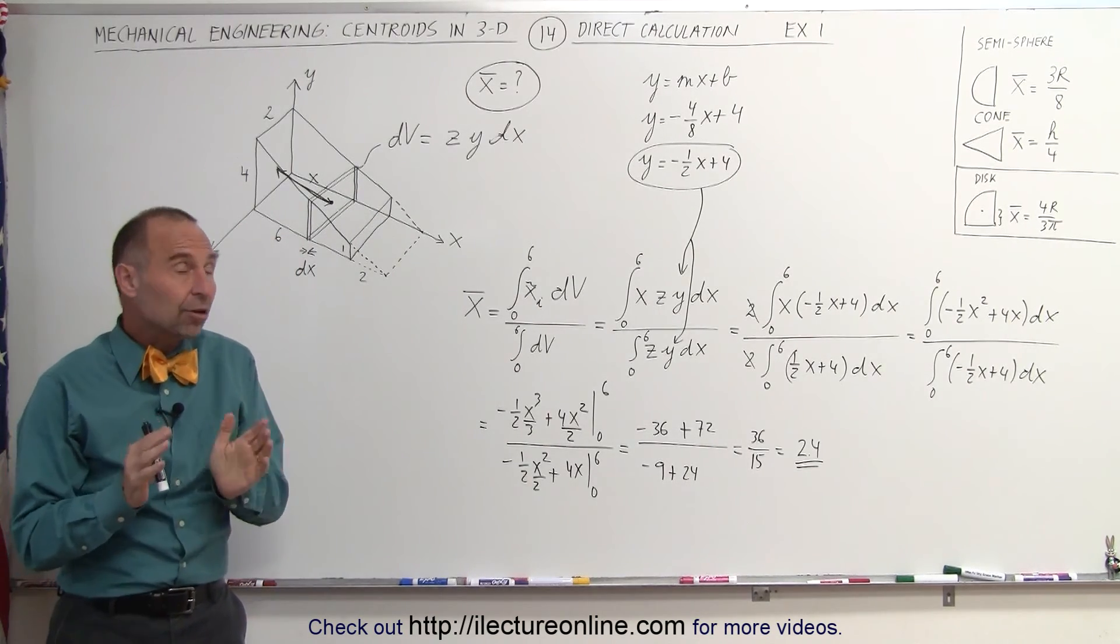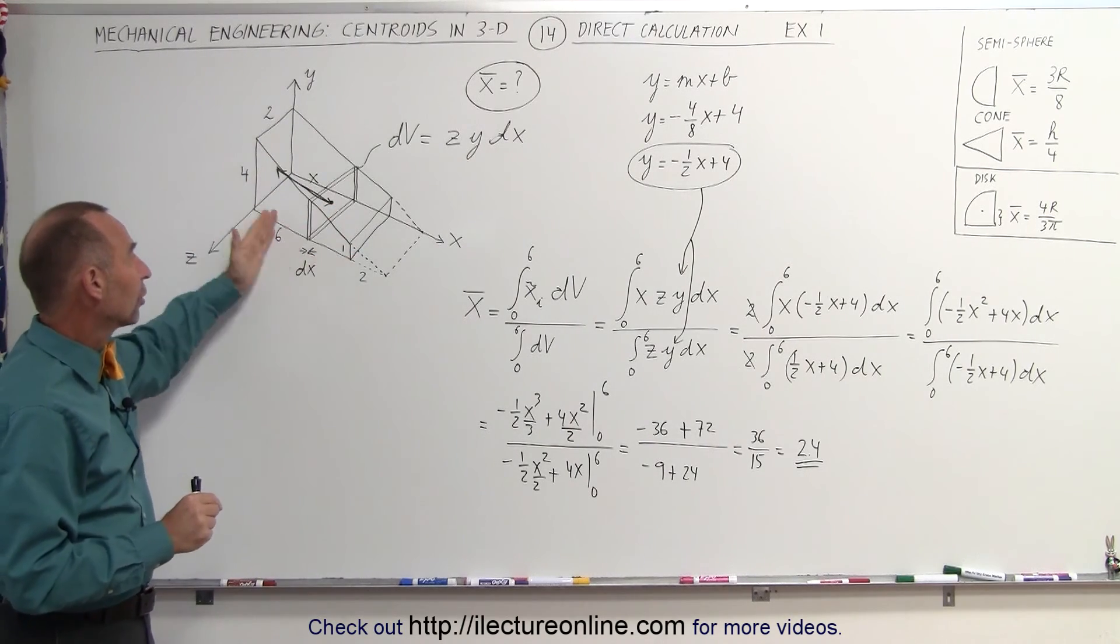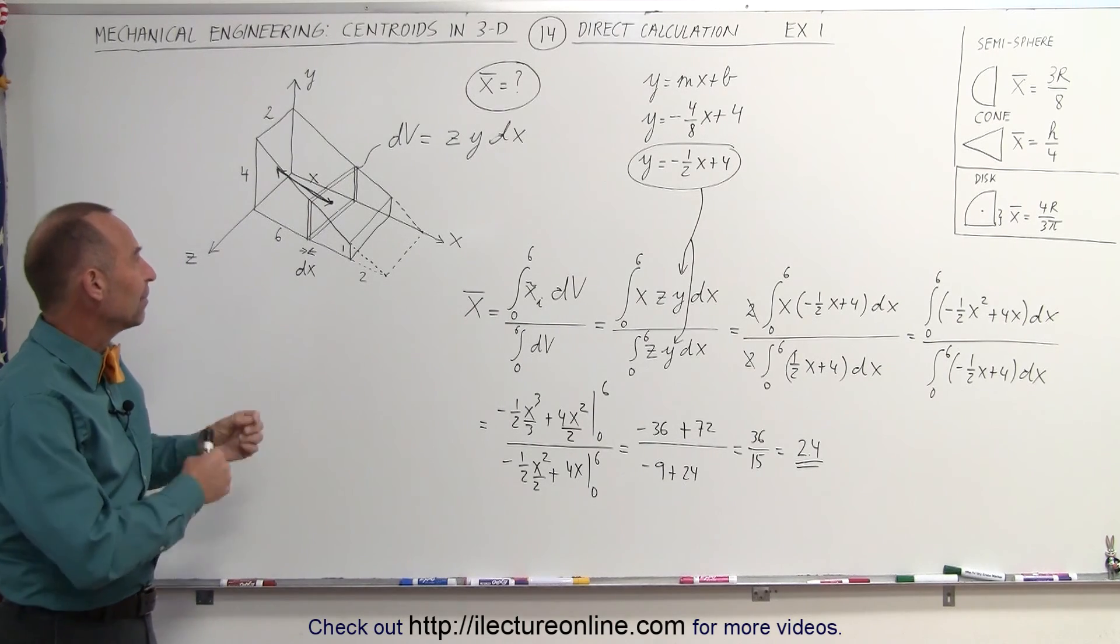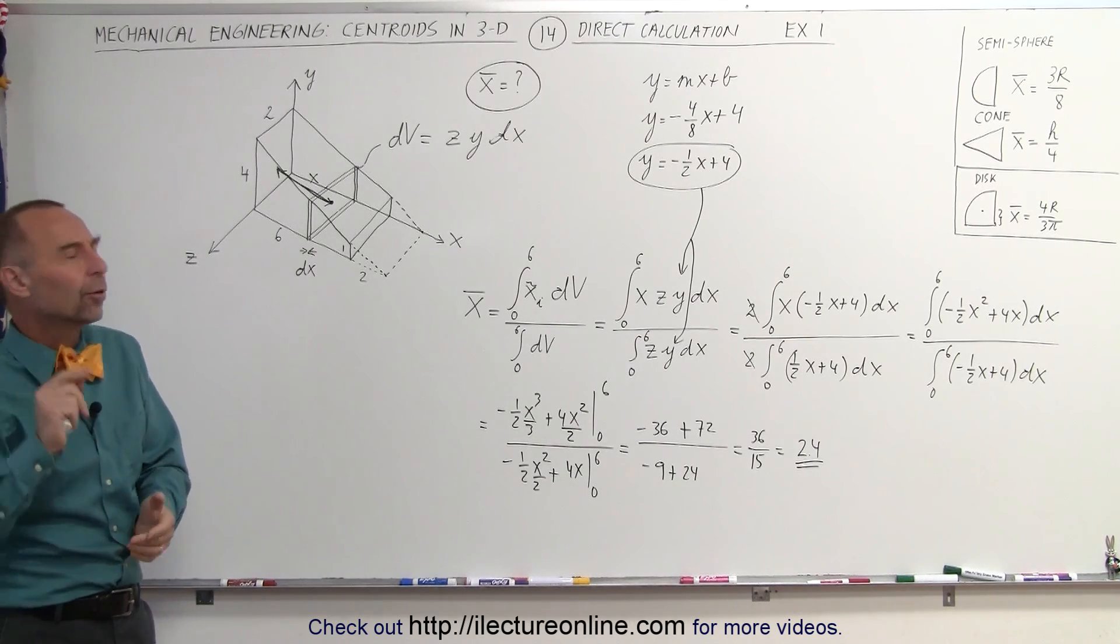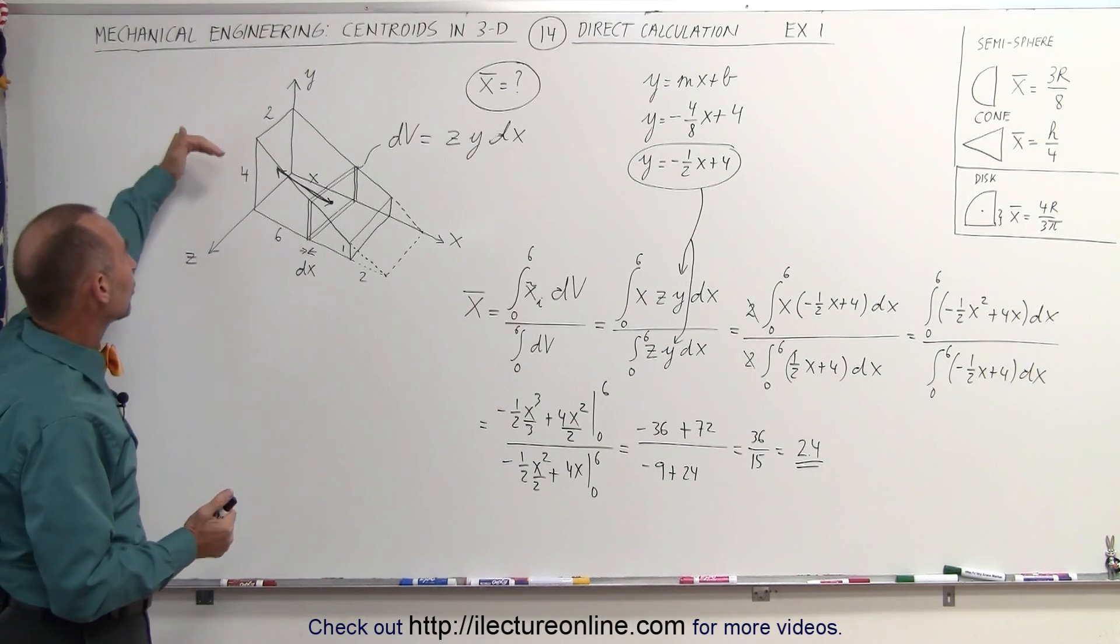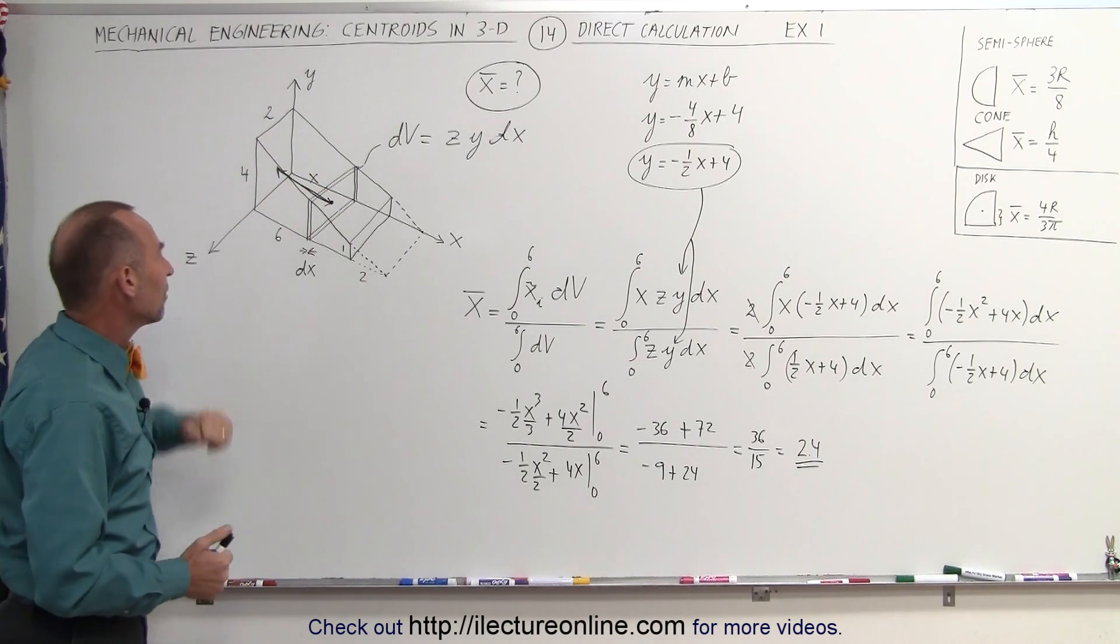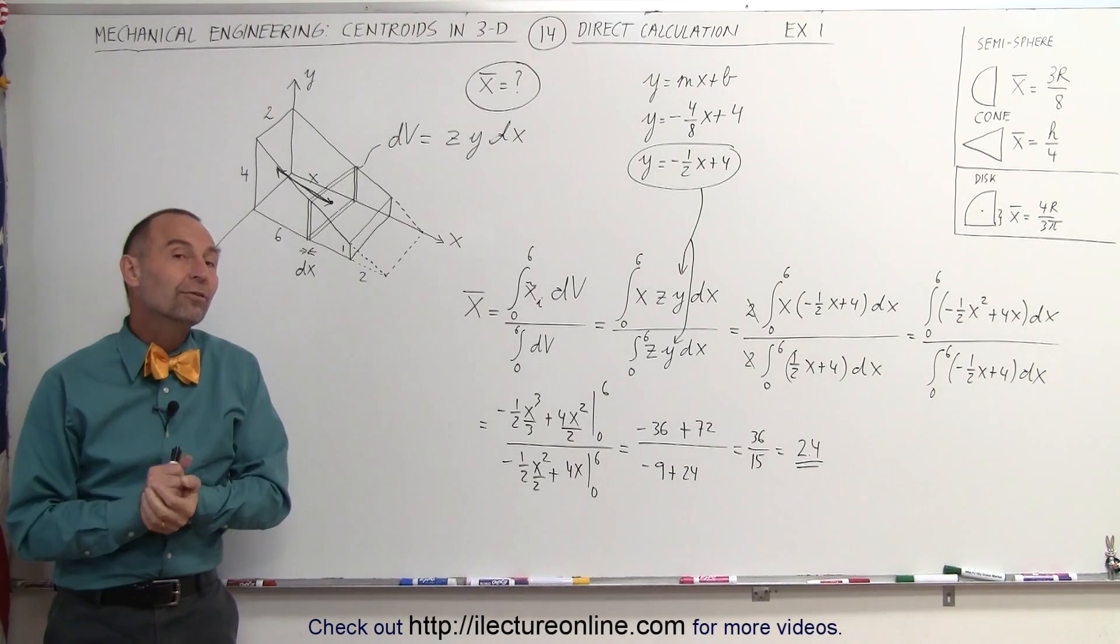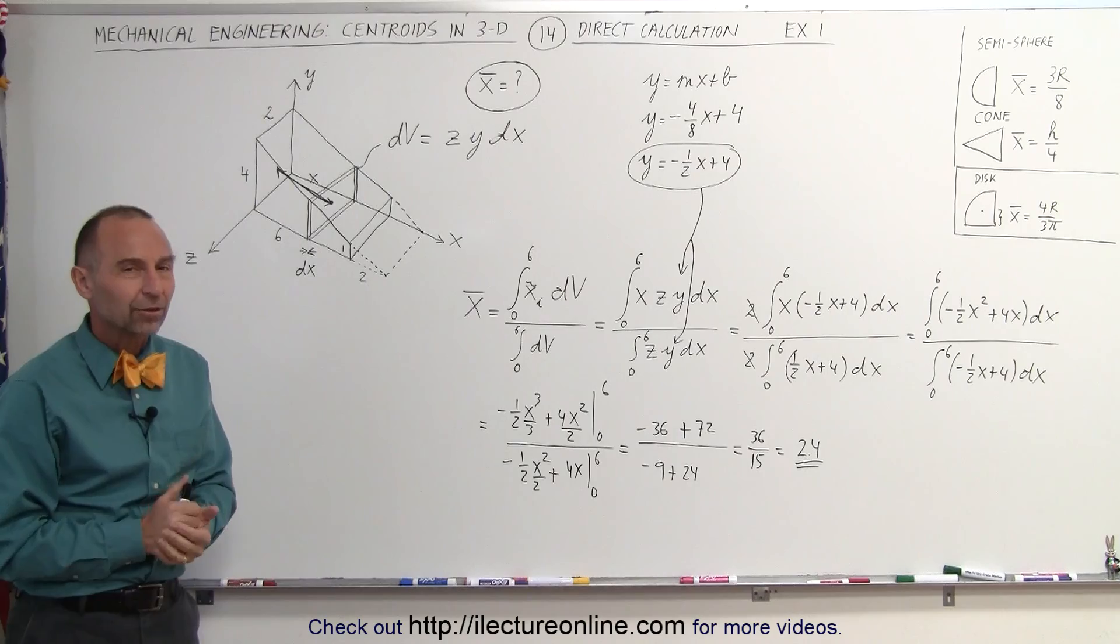Now in the next video we're going to do the same thing, but in this case we're going to find the y-coordinate of this cutoff wedge, to see that with the same technique, we can also find the y-coordinate and even the z-coordinate, although in this case the z-coordinate we can just look at it by inspection, we know that for z it's equal to 1, because everything is symmetric in the z direction. So stay tuned if you want to see how we use the very same technique to find the y-coordinate of this particular shape as well.